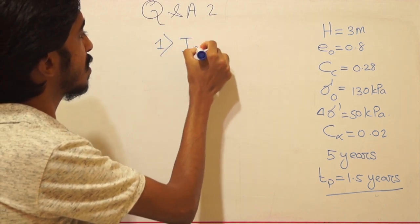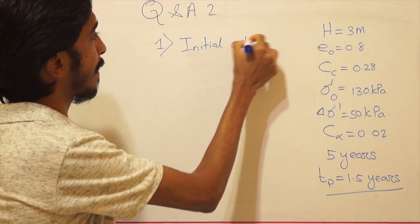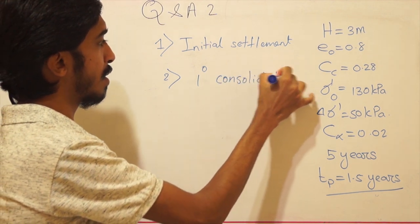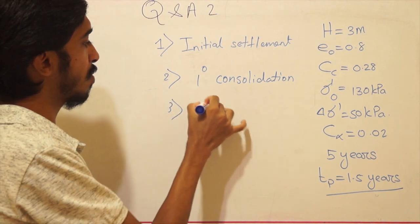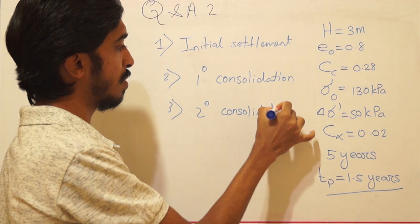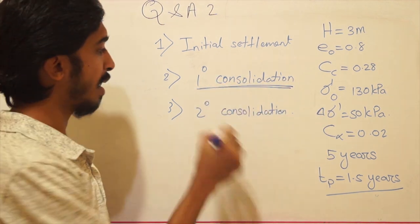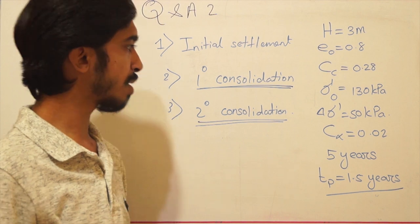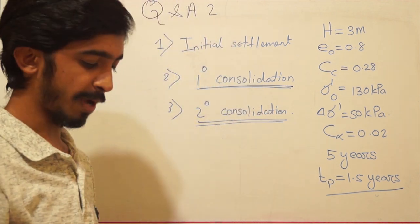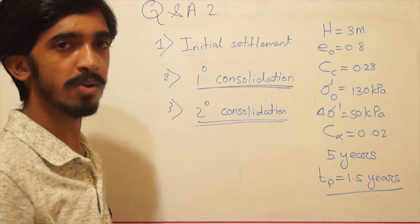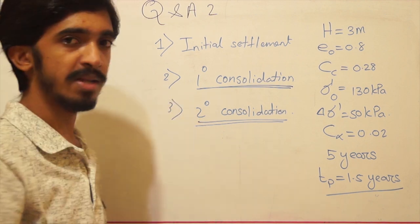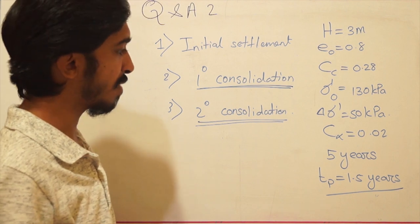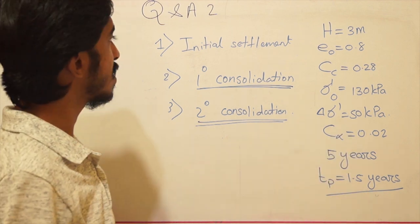The three portions are: one, the initial settlement; two, the settlement due to primary consolidation; and three, the settlement due to secondary consolidation. Usually the initial settlement takes less time and is comparatively low in value compared to the final consolidation. We have seen some questions on primary consolidation and we will see the secondary consolidation part as well.